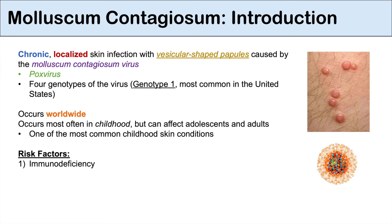Some of the risk factors for molluscum contagiosum include immunodeficiency. Anything that causes immunodeficiency, like infection with HIV or steroid use, can lead to an increased risk for becoming infected with this condition.